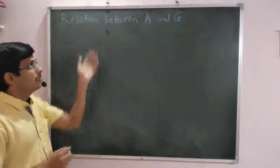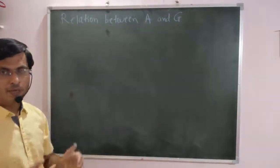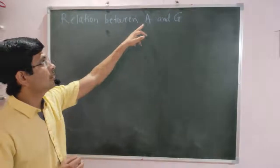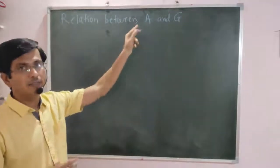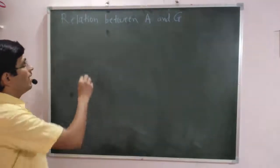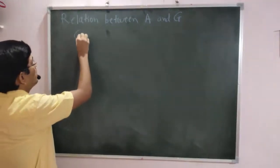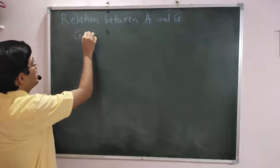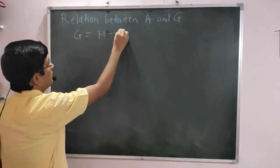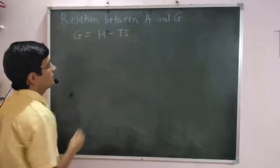Now we see the relation between Gibbs free energy G and Helmholtz work function A. We know by the definition of free energy, we can write G is equal to H minus TS.